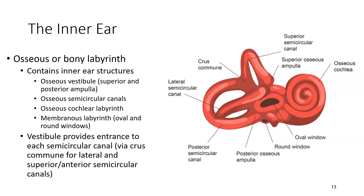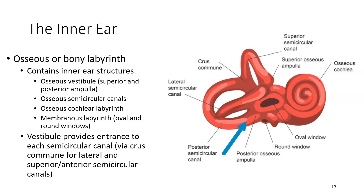The vestibule in the osseous labyrinth is the entryway into each of the semicircular canals. The lateral and the superior or anterior semicircular canals are connected by the cruce commune. The posterior semicircular canal has its own branch off of the vestibule.